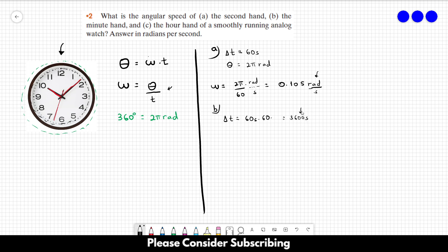That's delta t, and we're going to use the same equation as before. The angular displacement is equal to 2π radians, so the angular speed is going to be 2π divided by 3600. This equals 1.75 times 10 to the minus 3 radians per second. That's the answer for letter b.